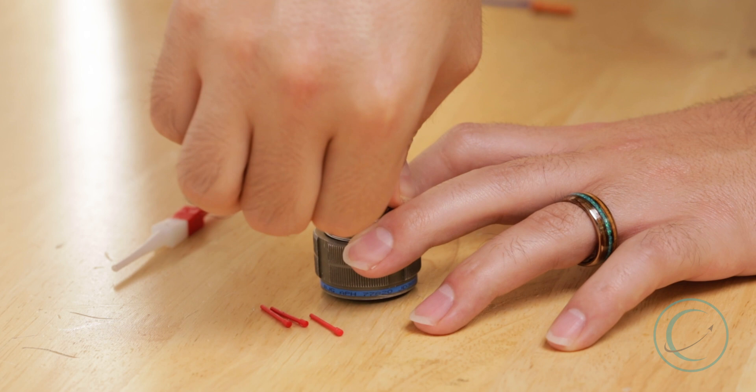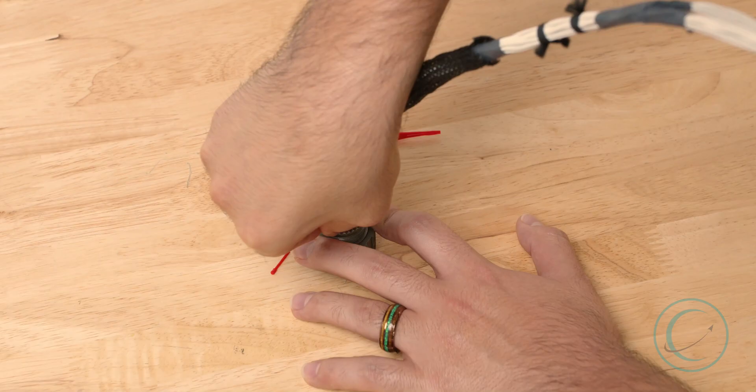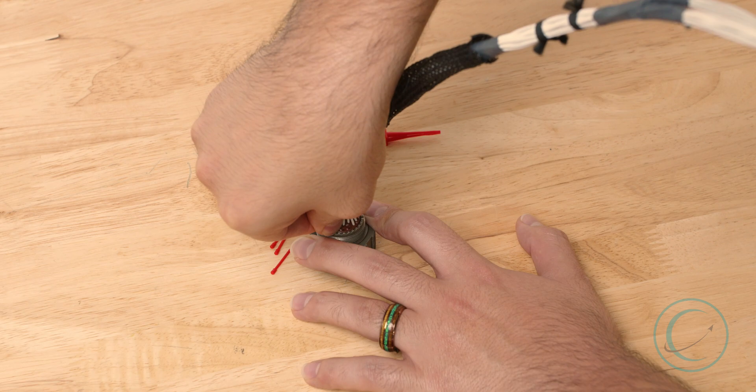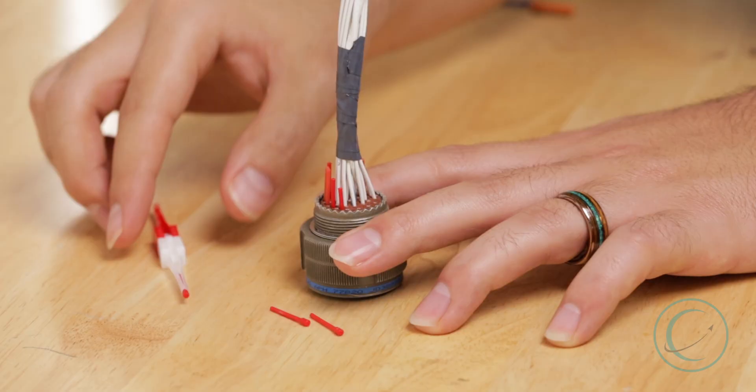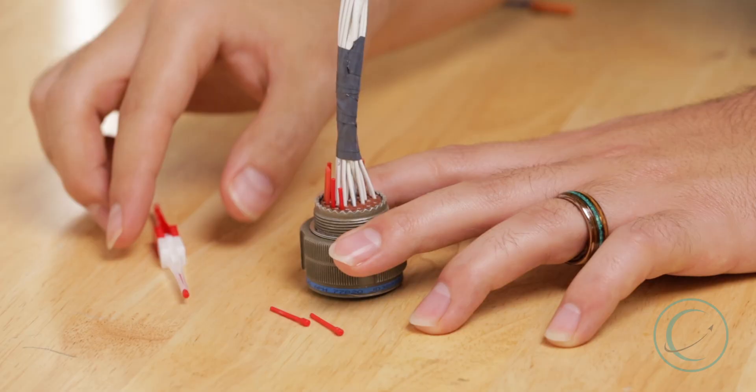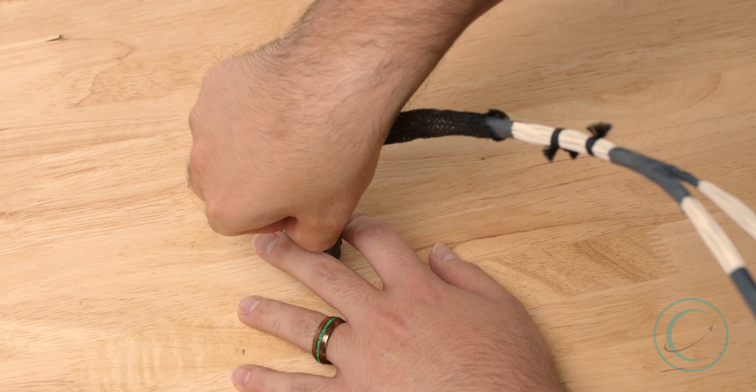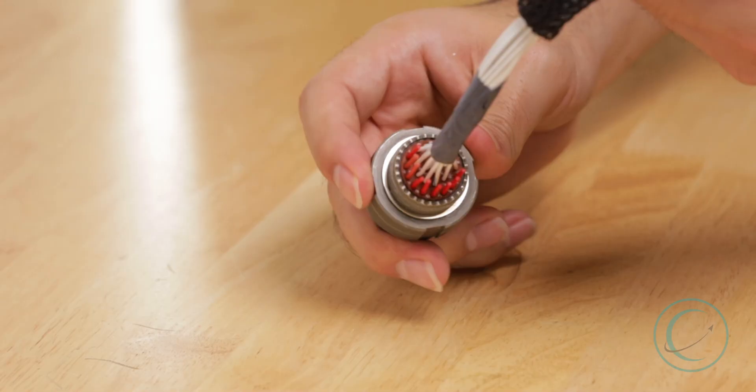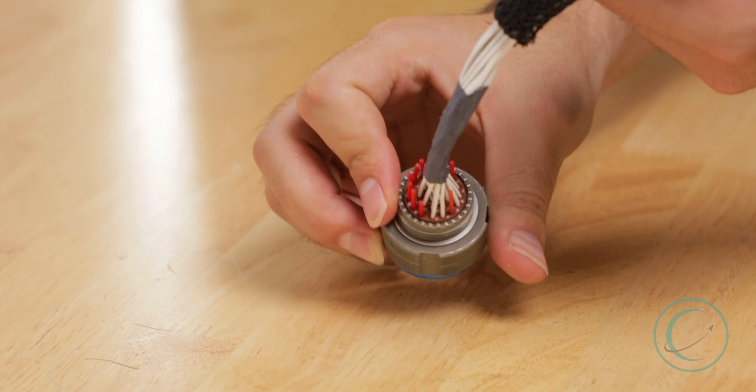You have to make sure they're seated correctly though in order for this to work. Now this is just a demonstration. This, of course, is a training connector that will not be put onto any flight-ready harness. So once we put all the filler plugs inside of this connector, we now have a fully populated connector.